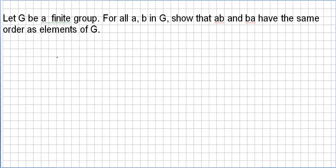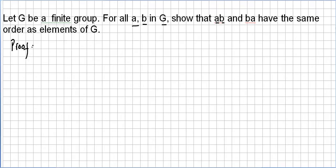In this video we are asked to prove that for a finite group G, for all a and b in G, the element a times b and b times a have the same order as elements of G. This is in a certain way surprising — that if a times b has a certain order, then b times a will have the same order. Note that the group does not have to be abelian; we are talking about any finite group.